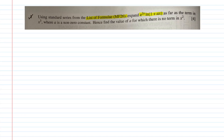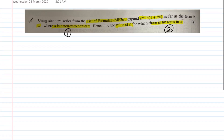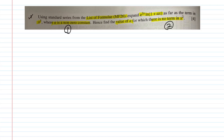Expand e^(2x) · ln(1 + ax) as far as the term in x³, where a is a non-zero constant. This is already a hint — a is a non-zero constant, which means the value of a will likely have two values. So if you only get one value at the end, something is wrong. Hence find a value of a for which there is no term in x². That's two hints: a is non-zero, and the x² coefficient equals zero.